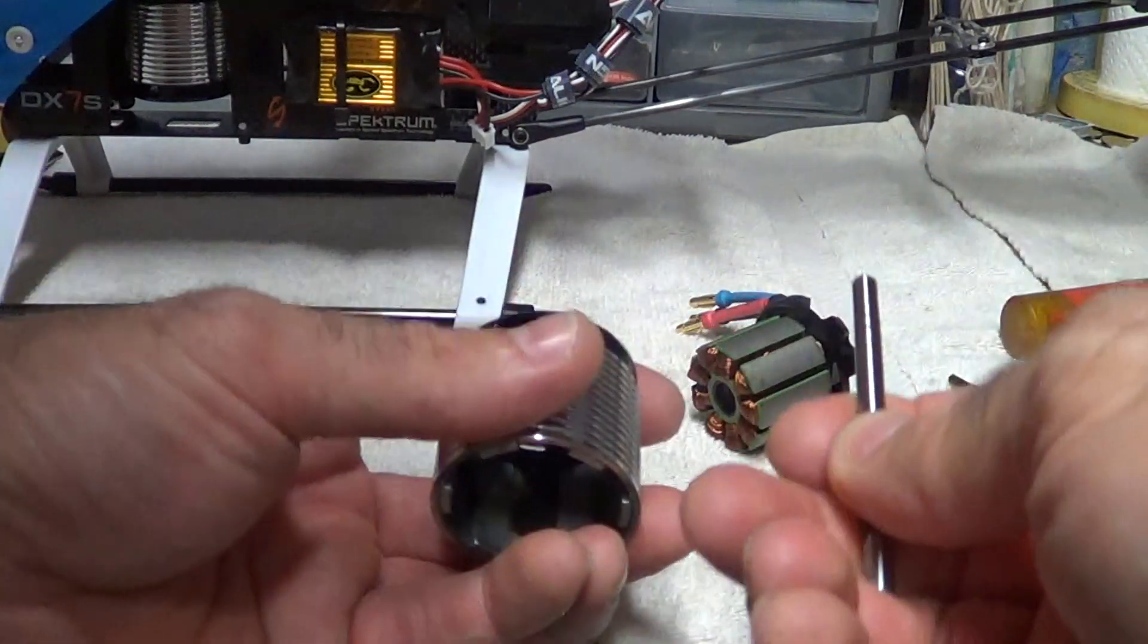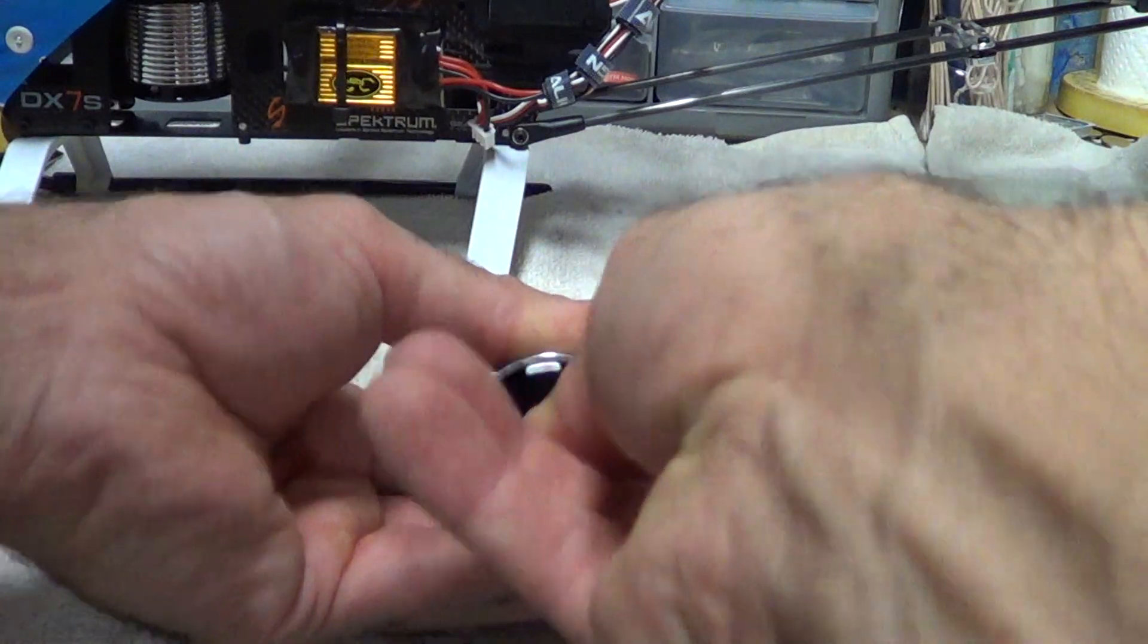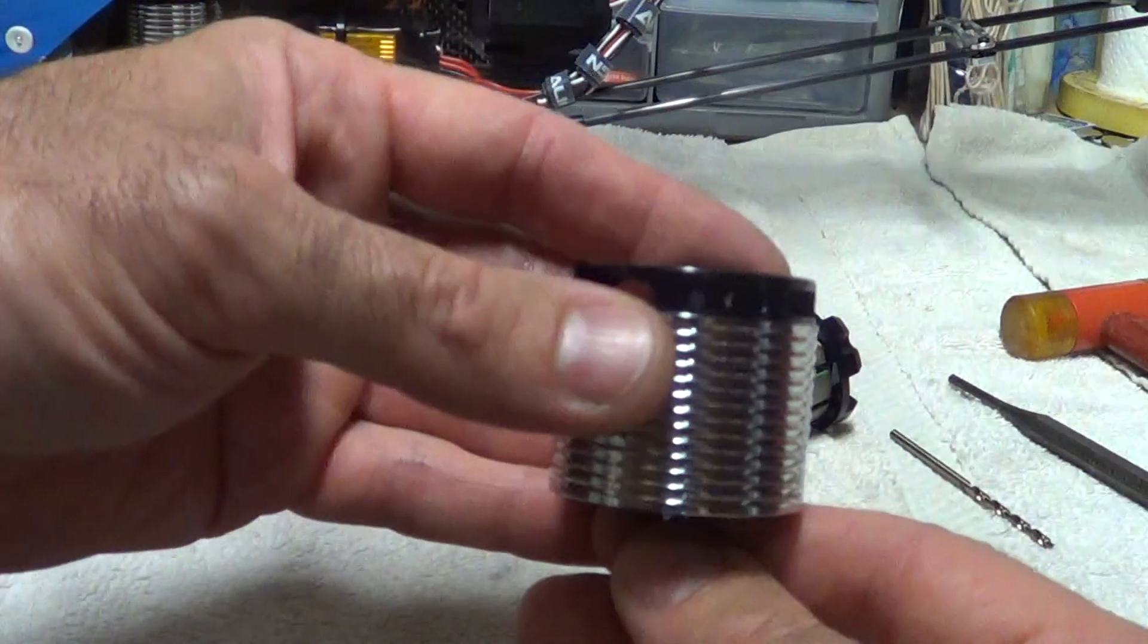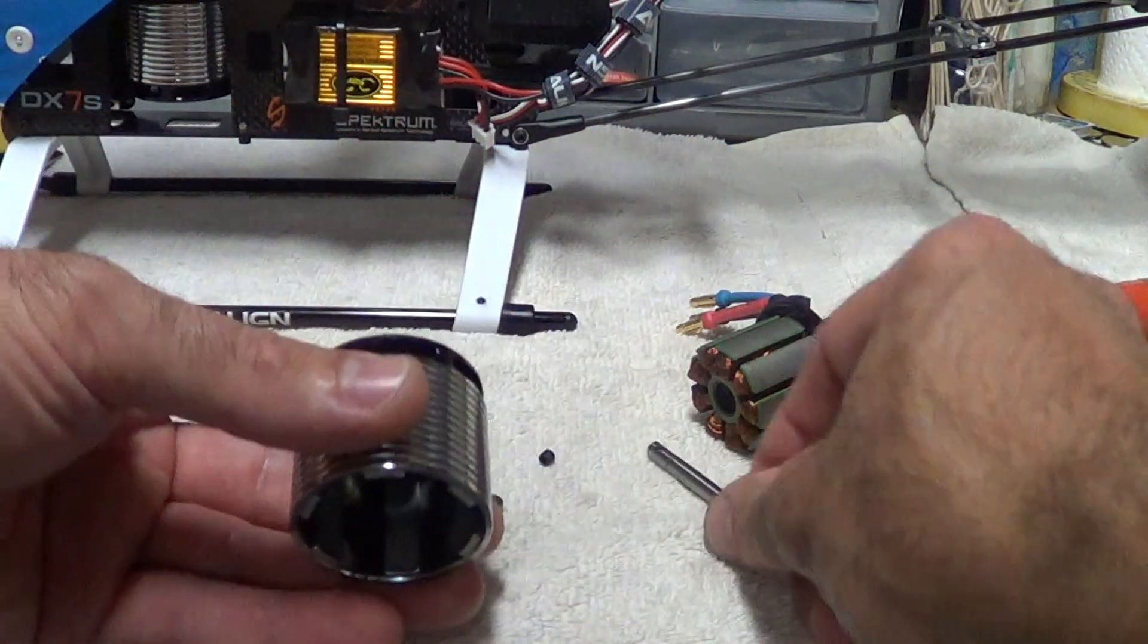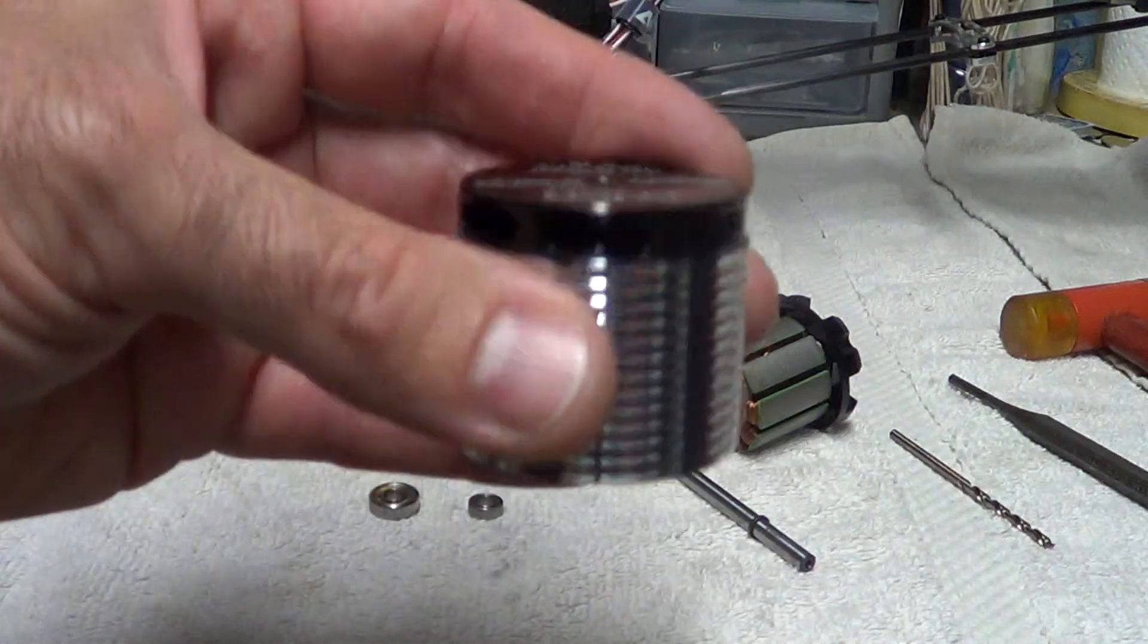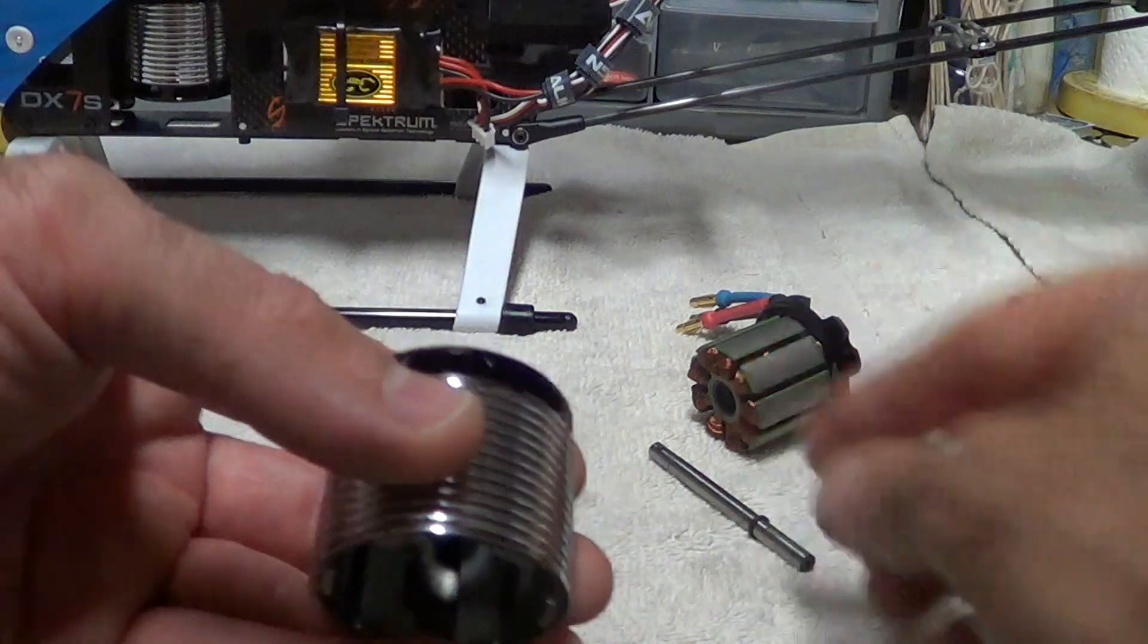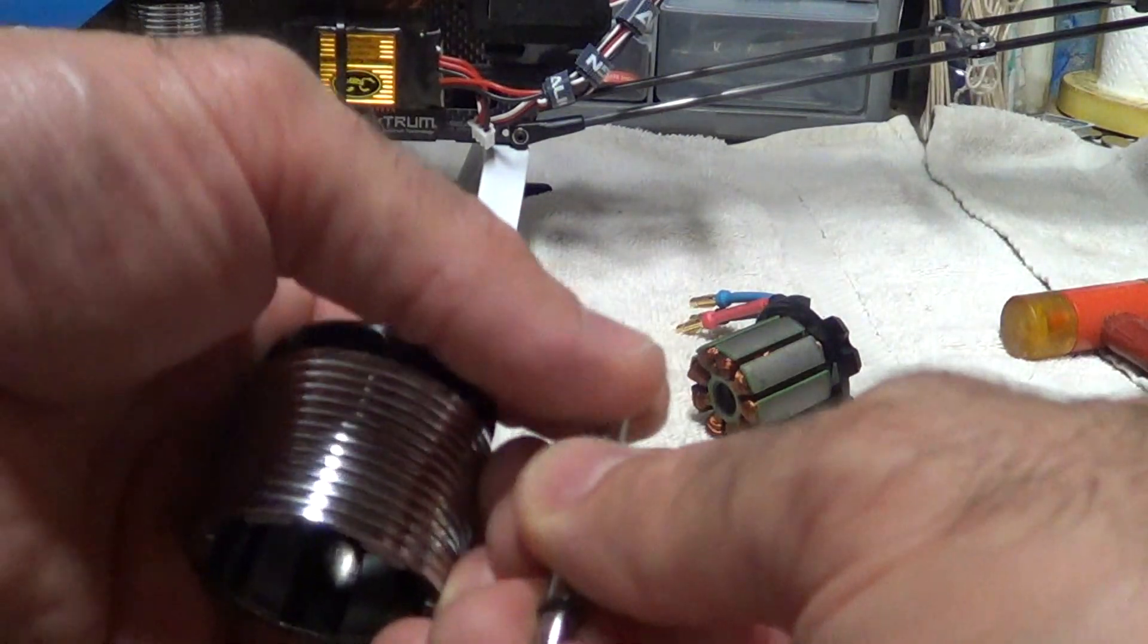And basically what you want to do is line that up the best you can, because it has to be lined up with the hole in there. There's a hole in there. That part's a little tricky, but it's just basically a matter of lining it up and then pushing the shaft through so that flat spot, you can get that set screw to hold it.